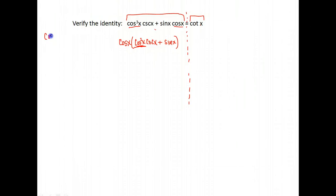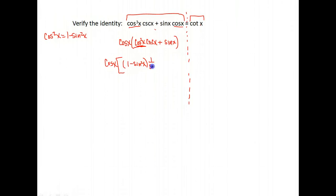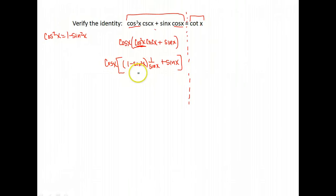There is. There's an identity that says cosine squared x is equal to 1 minus sine squared x. So I'm going to replace the cosine squared x with 1 minus sine squared x. I'm also going to rewrite this cosecant as 1 over sine x, because that's what cosecant is equivalent to. So now I have this, and notice everything in here is in terms of sine, so it may work out to simplify a little better.